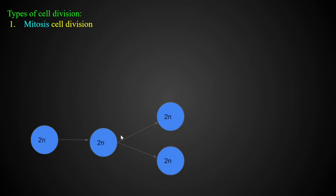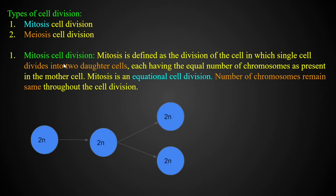There are three types of cell divisions: amitosis, mitosis, and meiosis. We have to study mitosis and meiosis — direct cell division and indirect cell division. Mitosis is defined as the division of the cell in which a single cell divides into two daughter cells.